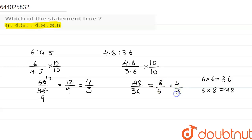So we get that 6 is to 4.5 in its simplest form is equal to 4 is to 3, and 4.8 is to 3.6 in its simplest form is 4 is to 3.